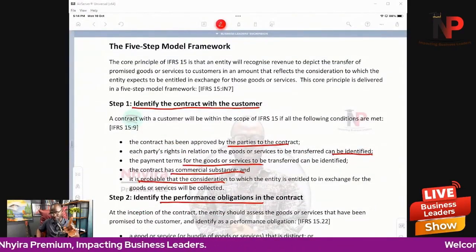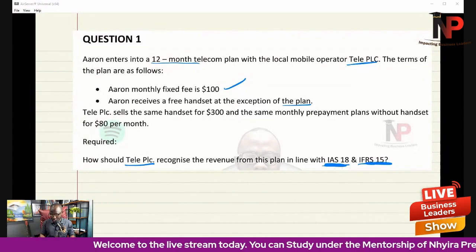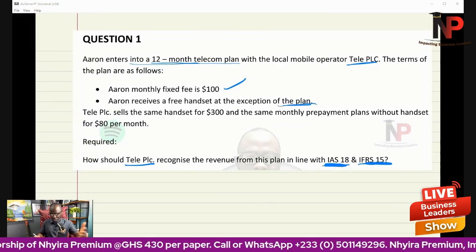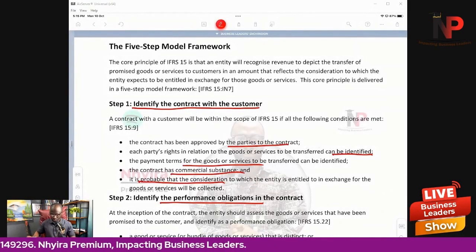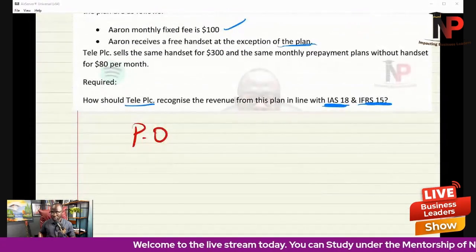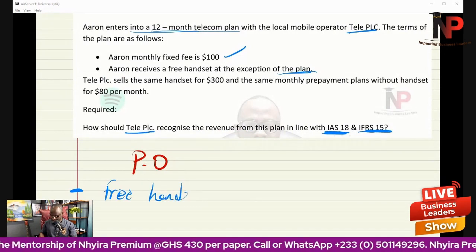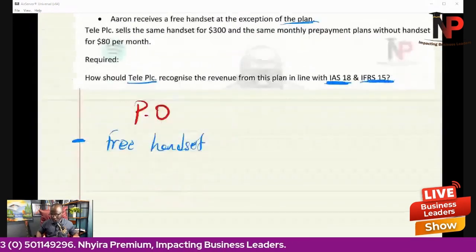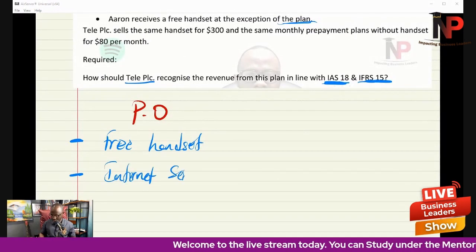Step one: is there a contract with a customer? Yes — Aaron entered into a 12-month telecom plan with agreed conditions: monthly fee payments and a free handset. Step two: what are the performance obligations? TelePLC will provide a free handset and also internet services every month.